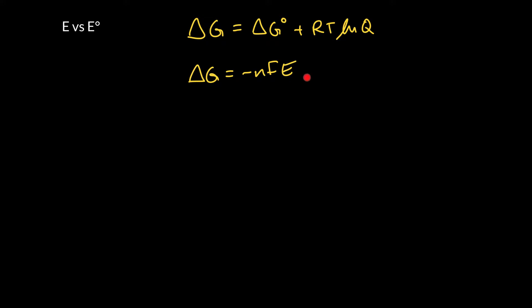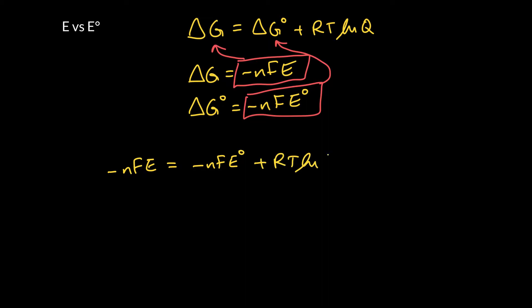And I won't write the cell in down here. We can also guess that delta G standard would be exactly equal to minus NFE cell standard. And so now we can just substitute these two values in. So we can take delta G and delta G standard, and we can write it in terms of our cell voltages. So that gives us minus NFE under the current conditions is equal to minus NFE standard under standard conditions plus RT natural log Q.